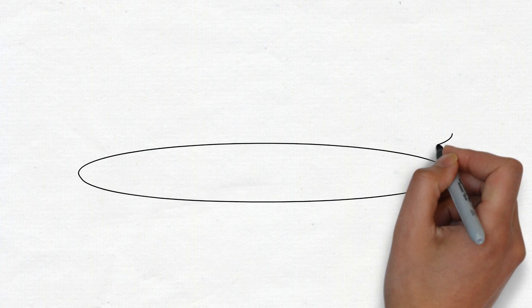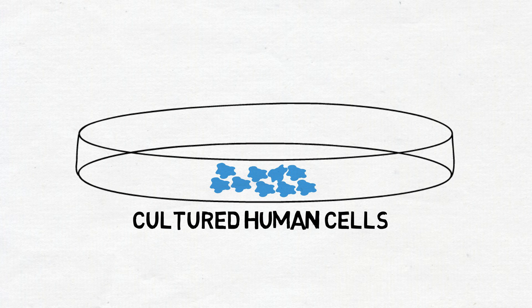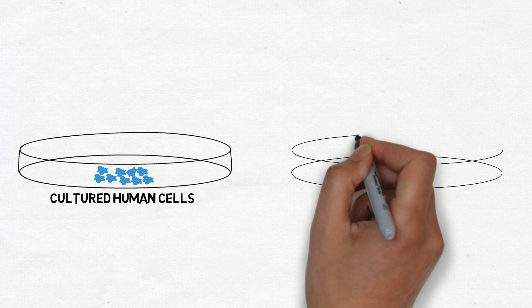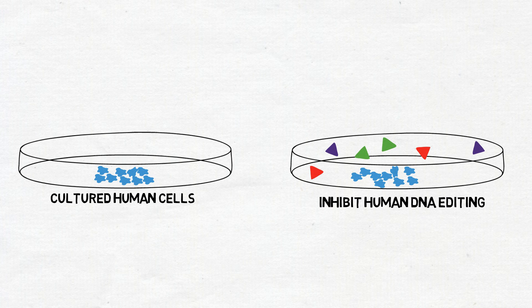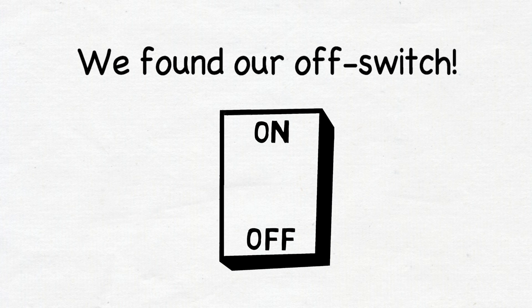To see if we could use these anti-CRISPRs in gene editing, we introduced them into cultured human cells. We discovered that each of the anti-CRISPR proteins dramatically inhibited the ability of Cas9 to edit human DNA. We found our off-switch.